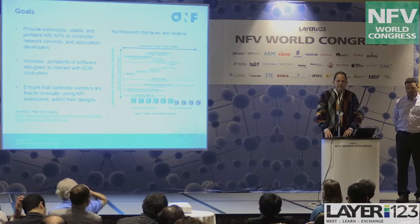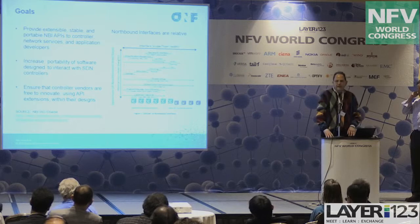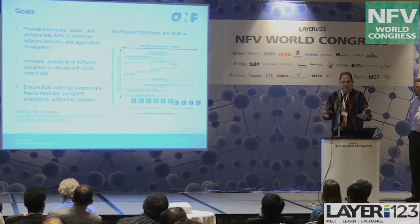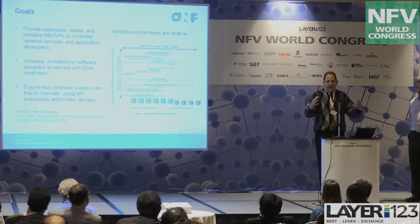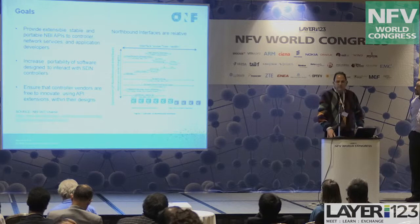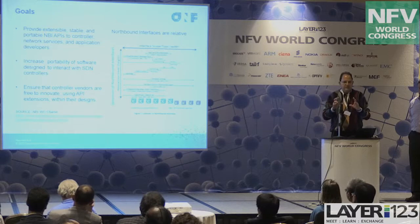If you look at this chart, what we see is that different layers — the term we use is latitudes, or different layers of northbound interfaces — depending on whether we're talking about network services embedded within an SDN controller or the highest level, which is the problem we chose to solve: how SDN applications interact with the SDN control layer. And what are some of the goals of this project?